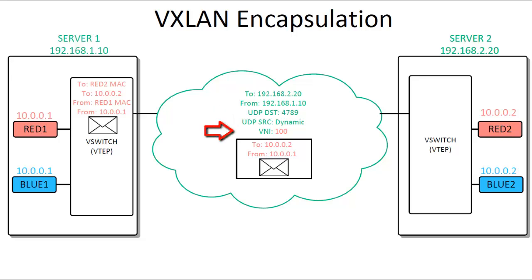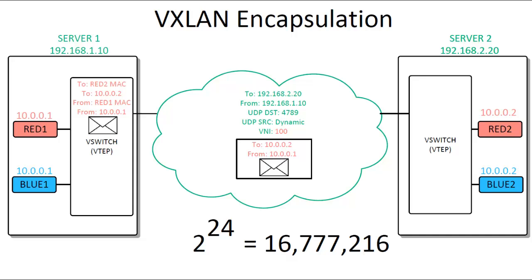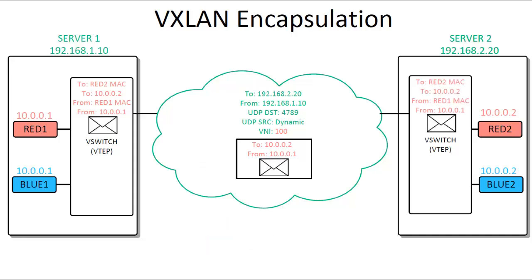Moving in on the packet, next is the VXLAN header. Recall that the blue and red tenants are using the same IP addressing. VTEPs distinguish tenant traffic using the VXLAN network identifier, or VNI. In this example, the red tenant's virtual network is assigned VNI 100. This VNI is analogous to a traditional VLAN tag, but with much more scalability — 802.1Q VLANs support only 4,096 combinations due to 12 bits reserved, whereas VNIs have 24 bits reserved, allowing over 16 million VXLAN identifiers. After the VXLAN header is the original packet from RED1. With the outer headers in place, the packet reaches the VTEP in Server 2 at 192.168.2.20, which reads VNI 100 for the red tenant, strips off all outer headers, and forwards the original packet from RED1 to RED2. RED2 has no knowledge of the VXLAN-based encapsulation required.